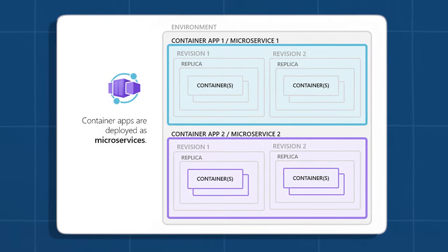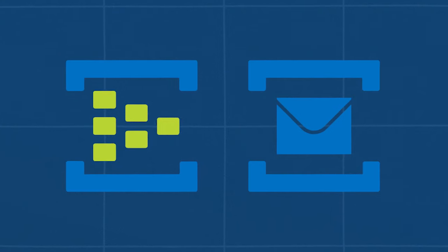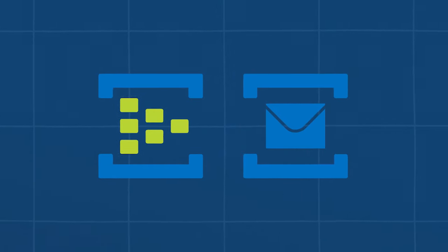Azure Container Apps supports several key use cases. They're ideal for building and deploying applications composed of microservices, enabling independent development, deployment, and scaling. They're also suitable for event-driven applications that need to respond to events from Azure Event Hubs, Azure Service Bus, and other event sources. Azure Container Apps are great for hosting APIs and web applications requiring autoscaling and high availability, as well as background processing — things like long-running, always-on services for tasks like processing, queuing, and batch jobs.